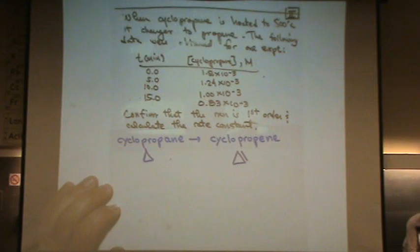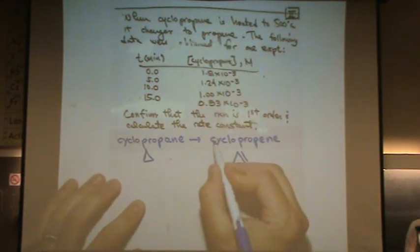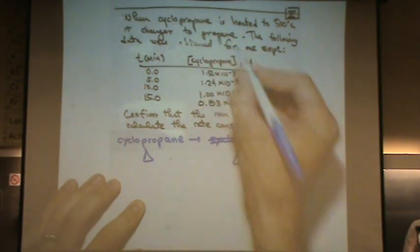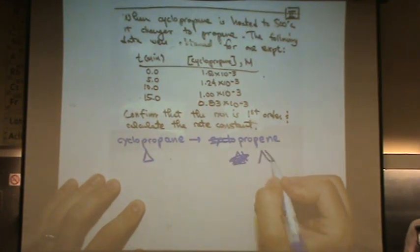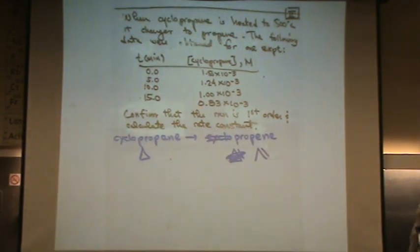So what you would do, or what I would do is, okay, if you want to confirm it's first order, you've got to plot. Oh, does it say propene? Oh, thanks. Propene. That's this. It looks very similar. So yeah, it's going to propene, which is still three carbons, got a double bond.